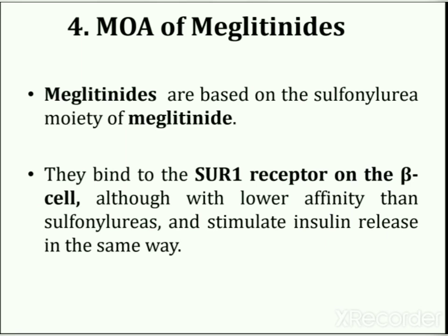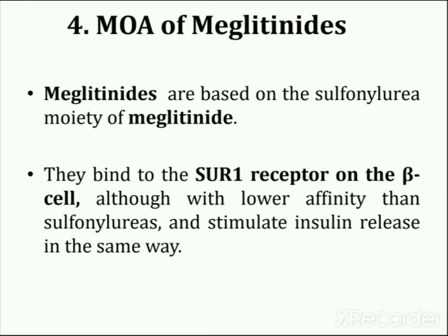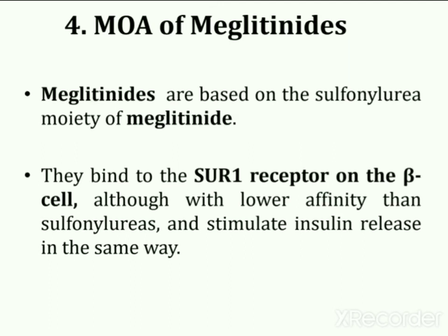Last is mode of action of meglitinides. Meglitinides bind to the sulfonylurea receptor as well as to other distinct SUR1 receptors on the beta cell membrane, which ultimately leads to the closure of ATP-dependent potassium channels and depolarizes the beta cell membrane, which in turn gives rise to calcium influx, enhanced intracellular calcium, and finally stimulation of insulin secretion. SUR1 is one form of the sulfonylurea receptor; the other two forms are SUR2A and SUR2B.